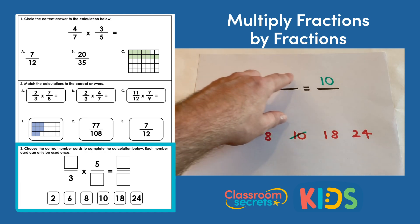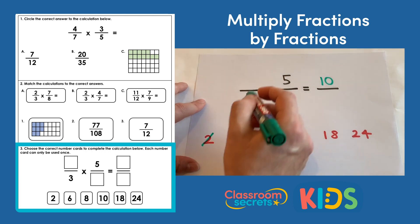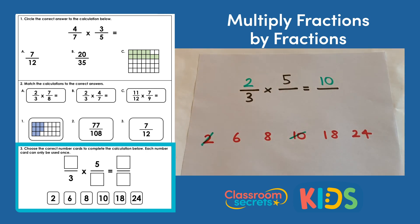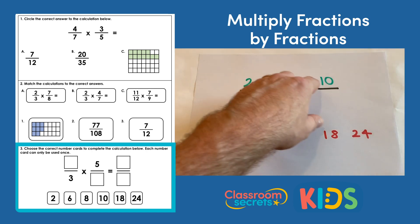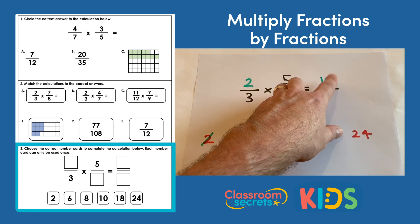To make 10 from multiplying two numerators together, it will have to be a 2 here, and we do have a 2 we can use. So the numerators pretty much have to be 2 here multiplied by 5 to make 10.